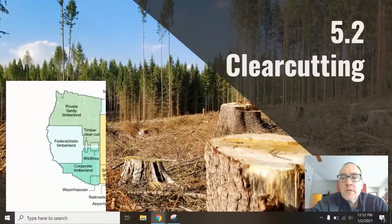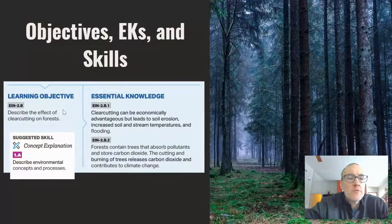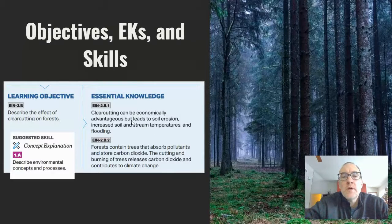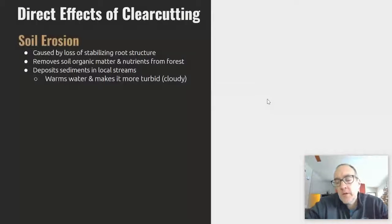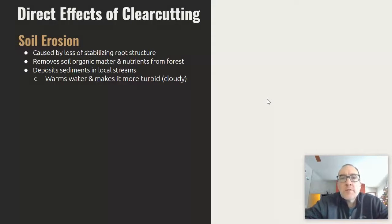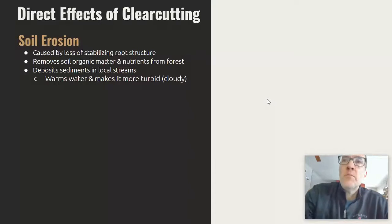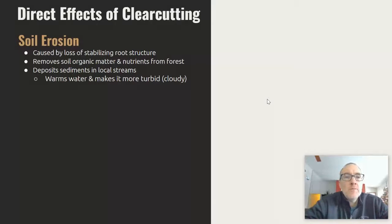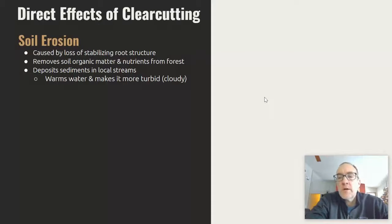One of the big problems we're dealing with in forest management is clear cutting — that's topic 5.2. You'll need to describe what clear cutting is and some of its environmental consequences. First I want to note that there are times when clear cutting is appropriate; for example, in Wisconsin we have managed stands of species like red pines grown for that sole purpose — those are not virgin forests. When we're mainly talking about clear cutting as a problem, we're dealing with old-growth forests, usually in the western United States.